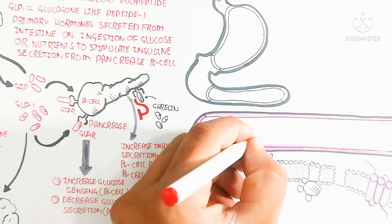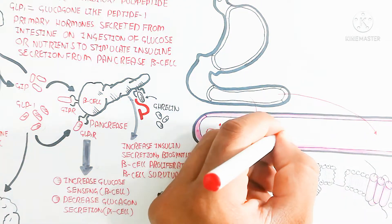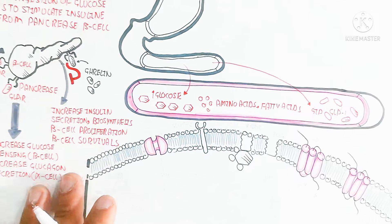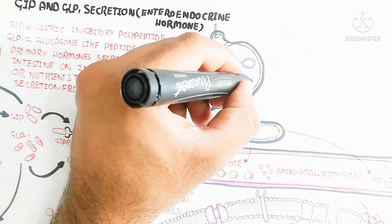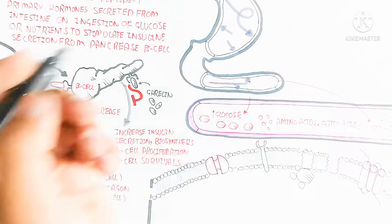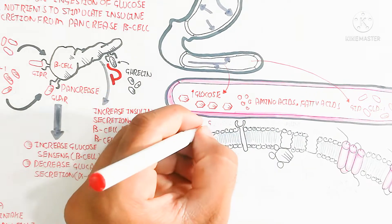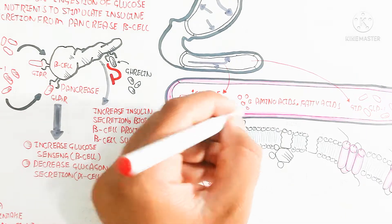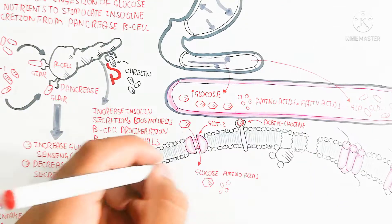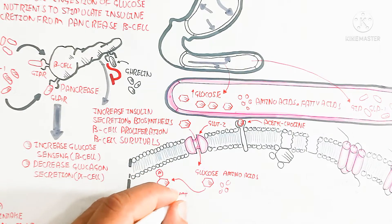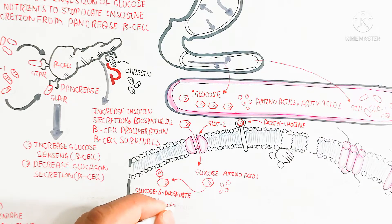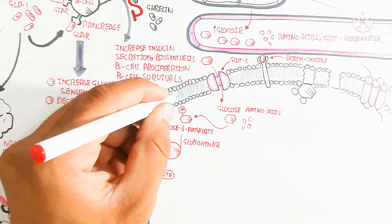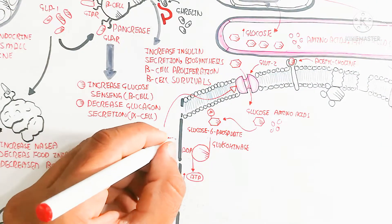GIP and GLP-1 are secreted due to stretching of the wall of the gastrointestinal tract. Here is the GLUT2 channel, which is a hyperglycemia-dependent channel — when hyperglycemia occurs, this channel allows glucose to move in. The influx of glucose and amino acids leads to glucose-6-phosphate formation through the glucokinase enzyme. Metabolism then proceeds from ADP to produce ATP through glycolysis, the Krebs cycle, and the electron transport chain.